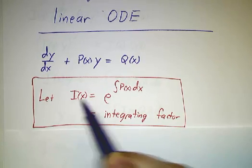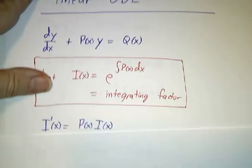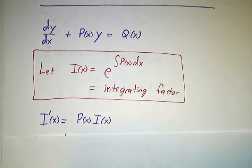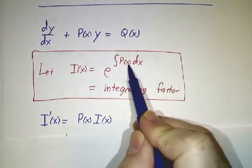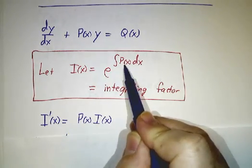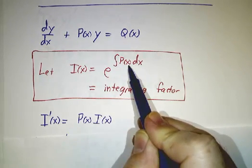Just let i be e to any antiderivative of p. And here's the key thing. If you take the derivative of i, well the derivative of e to the something is e to the something times the derivative of what's upstairs. And the derivative of the integral of p is just p.